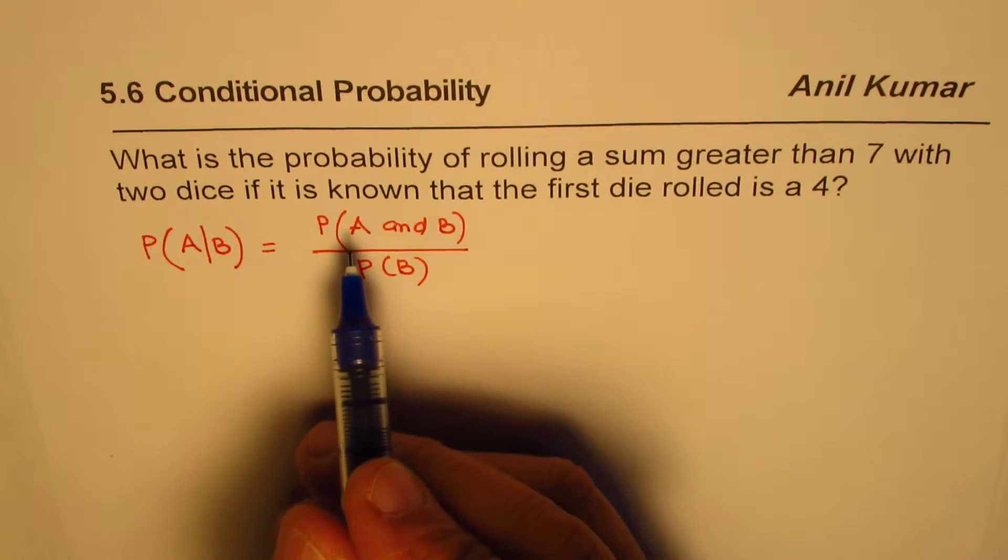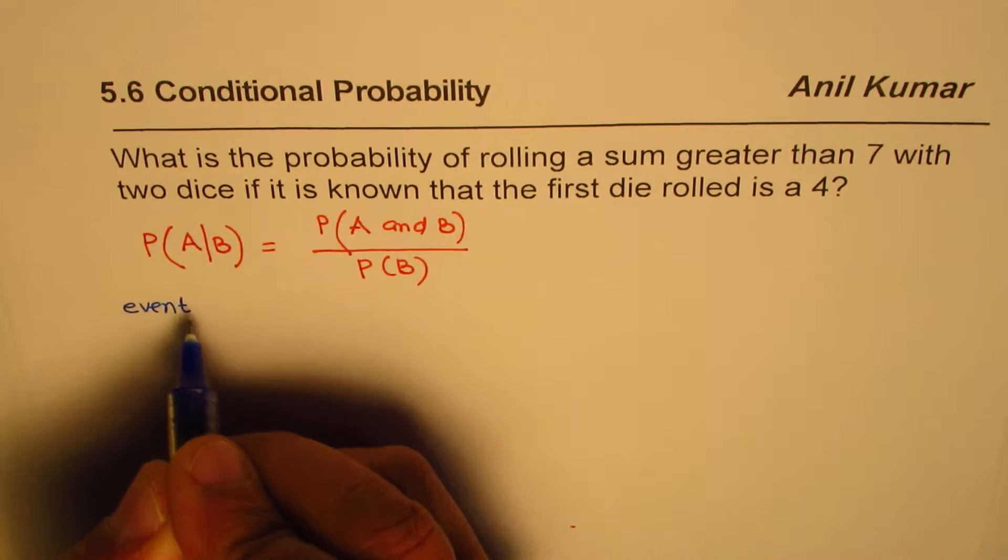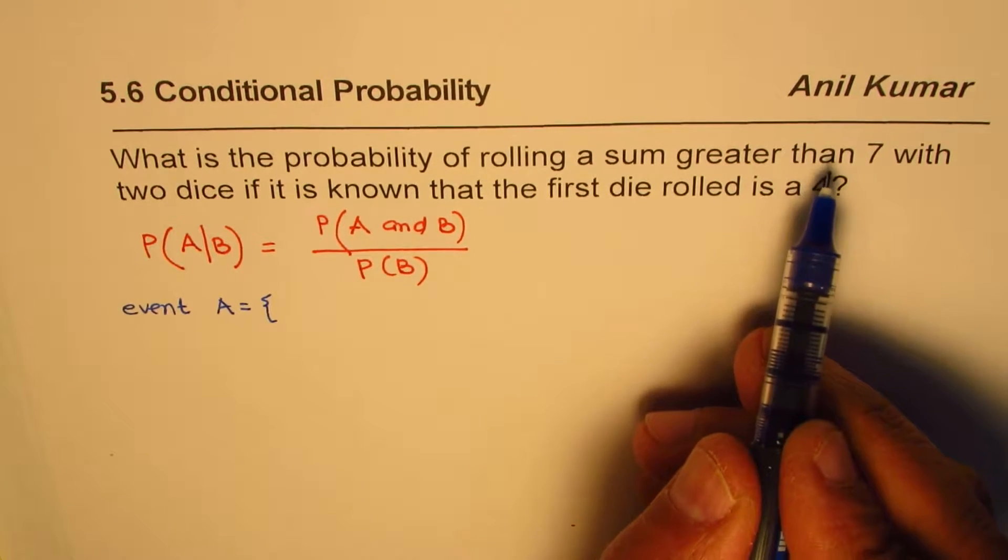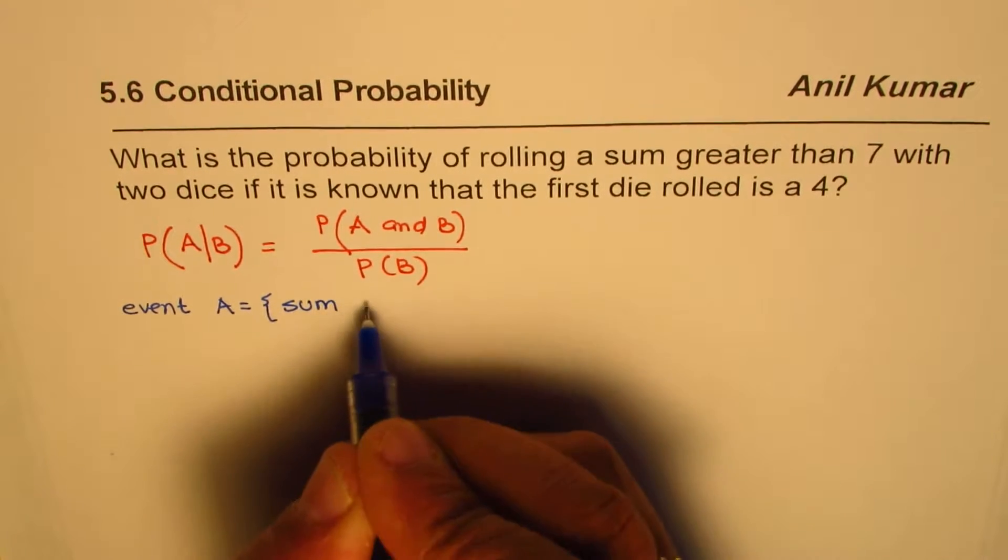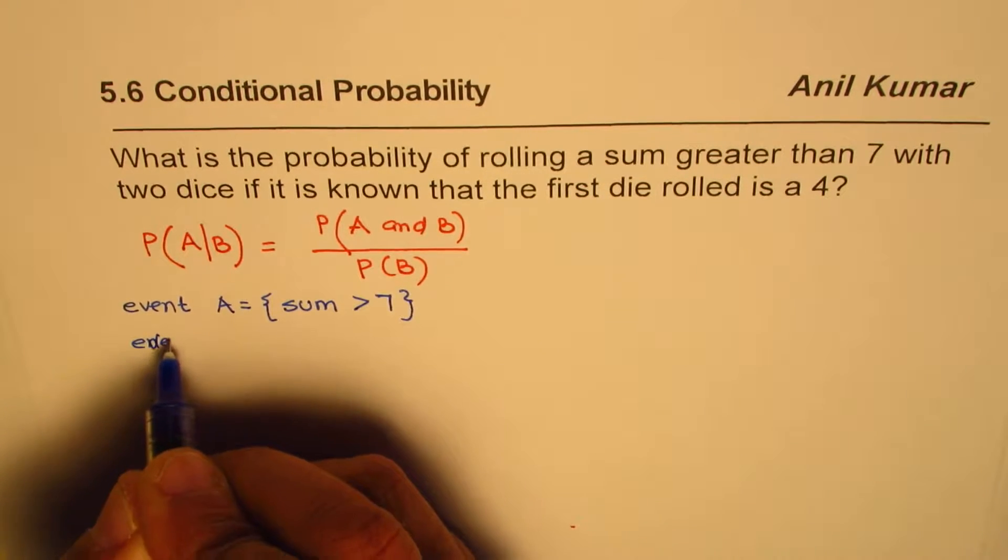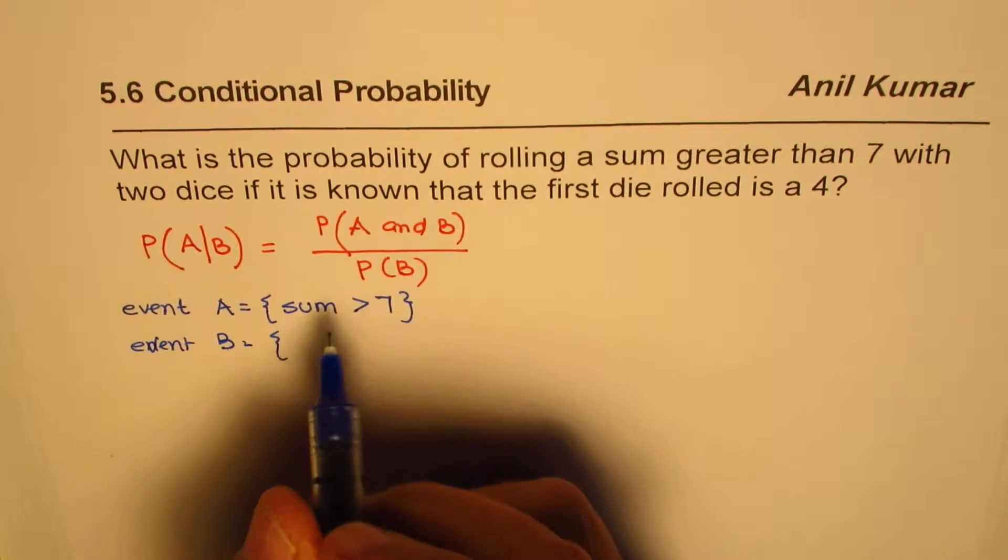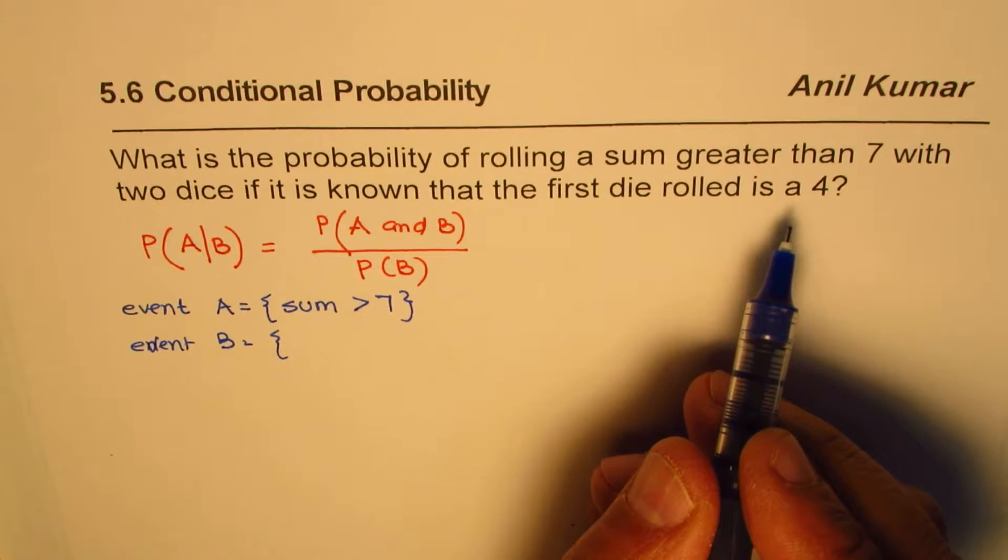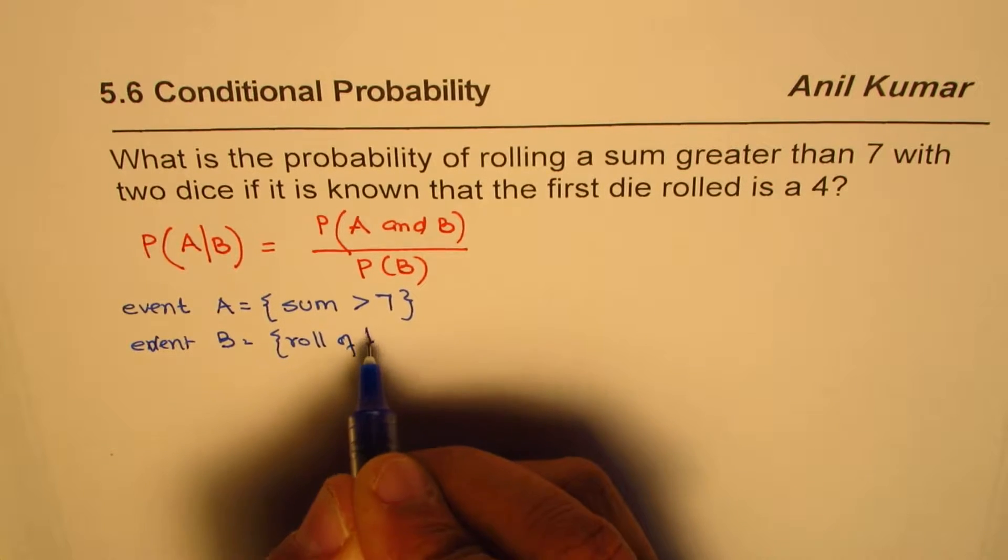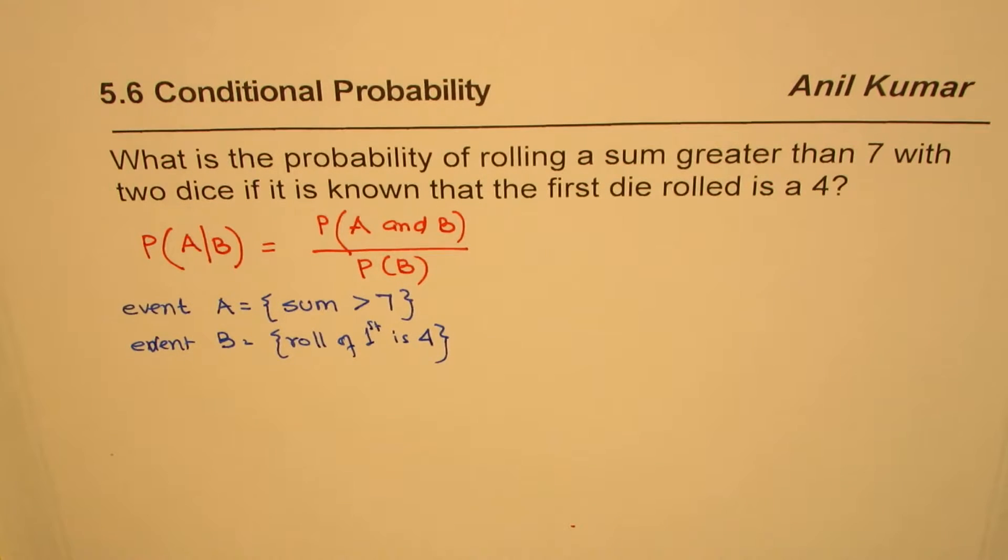So in this case, what is our event A? For us, event A is we need to roll sum greater than 7. So event A is sum greater than 7. And how about event B? Now event B is the first die is rolled. So first die roll is 4. So the event B is that the roll of first die is 4. So that is how we can define our events.